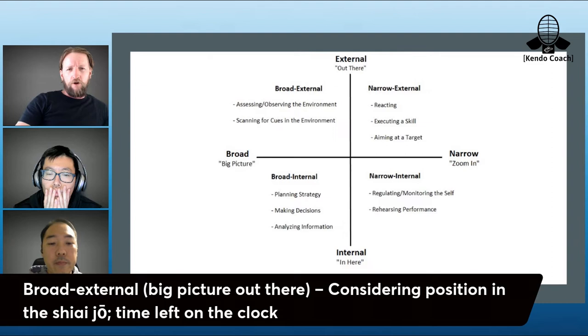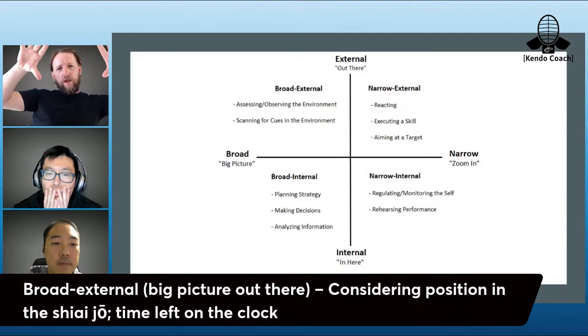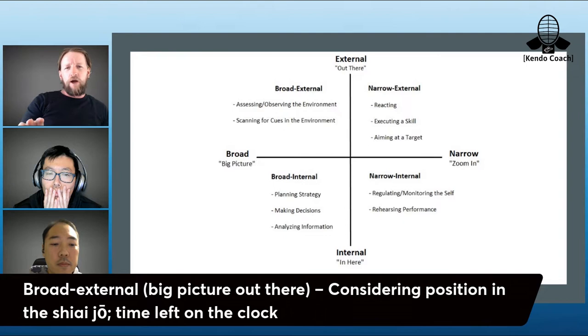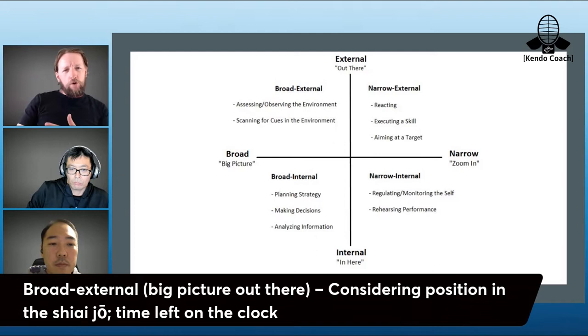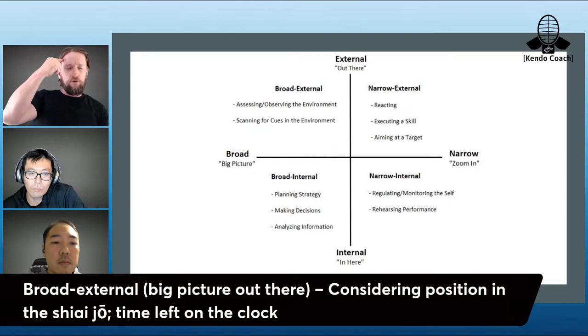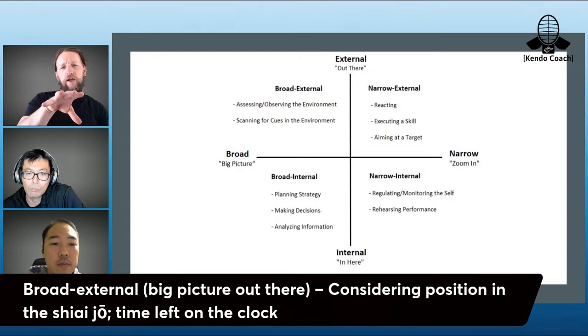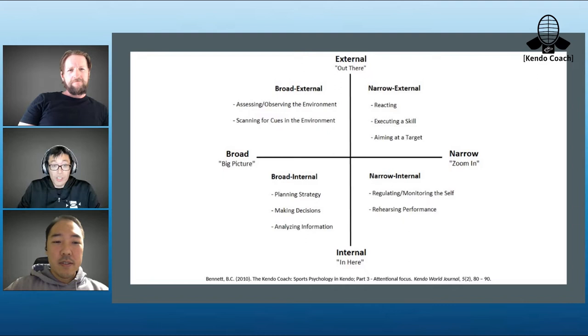Broad external is looking out at the big picture - what position you are in the shiaijo, are you up against the line or on the X. If you watch a less experienced shiaisha during competition, their potential to step out is much greater than a more experienced person, because their focus isn't able to switch between what's going on out there and what's going on in here. More experienced people know where they are and their focus can be easily switched from that broad external to narrow. You have to position yourself in shiai for your advantage.